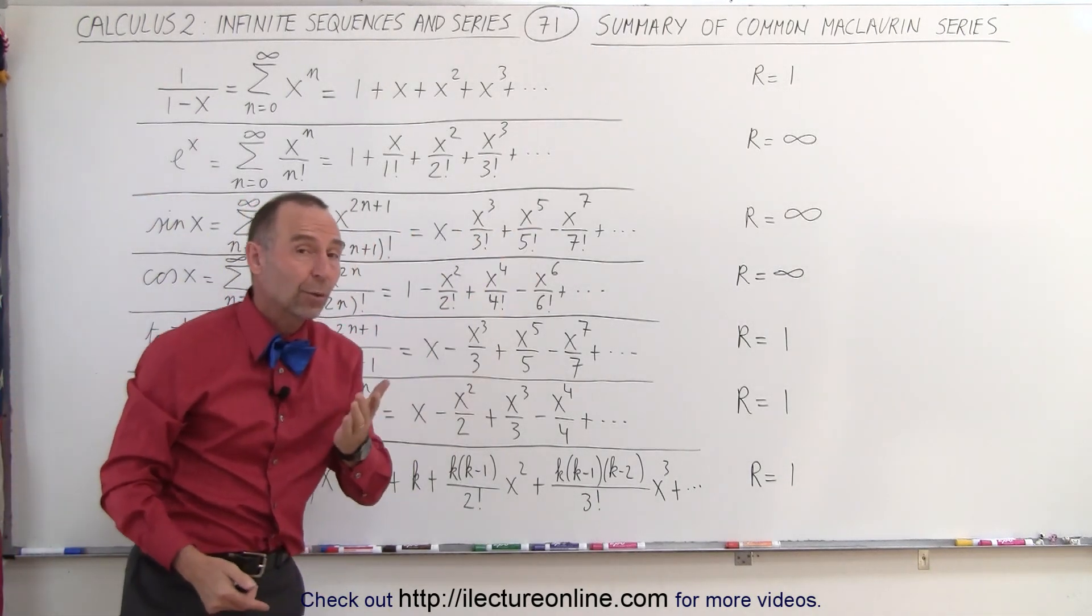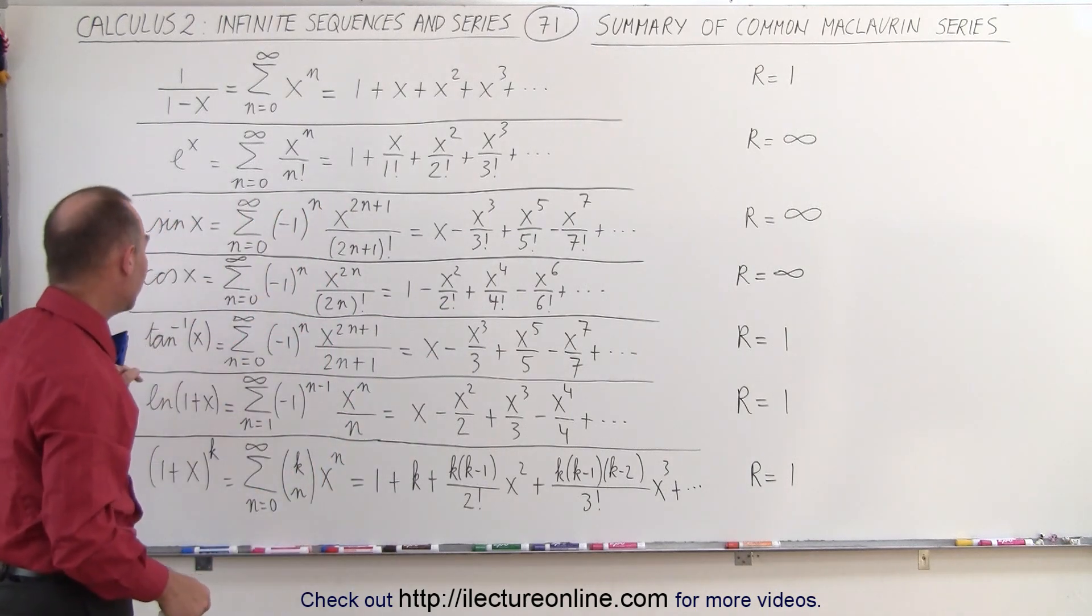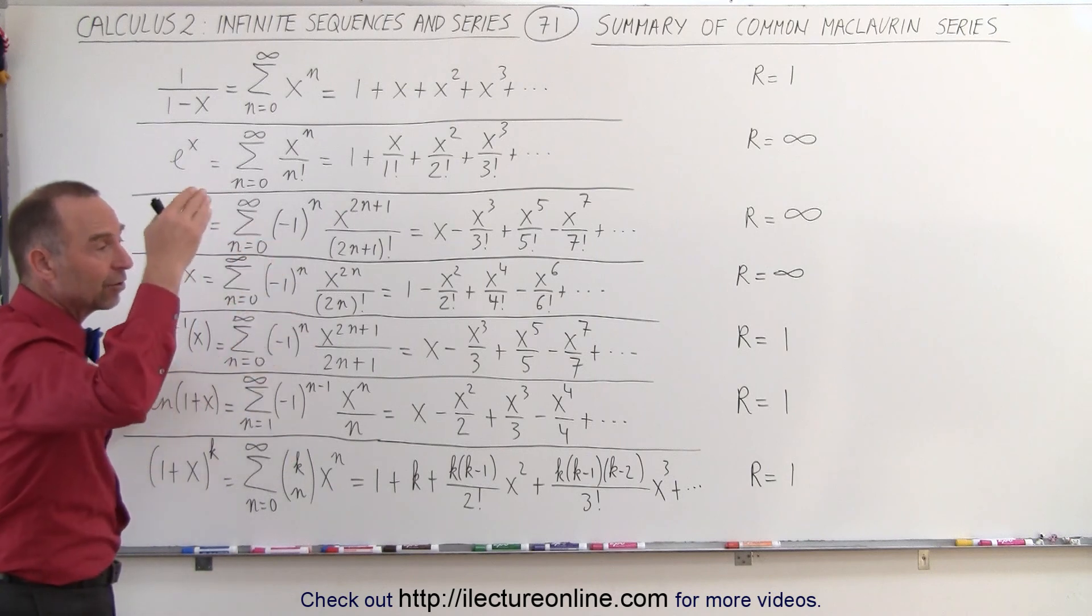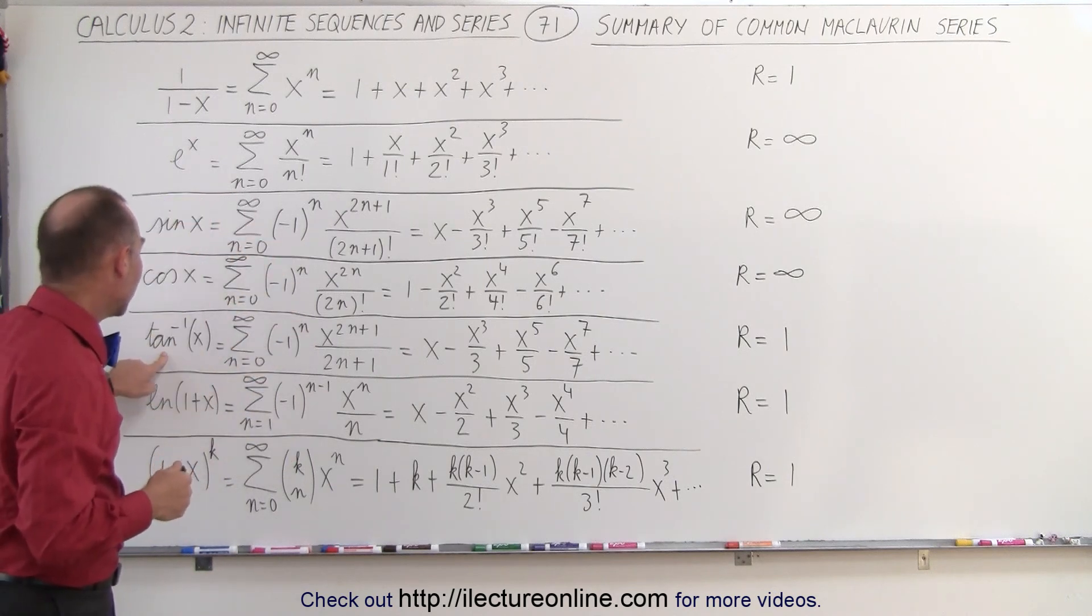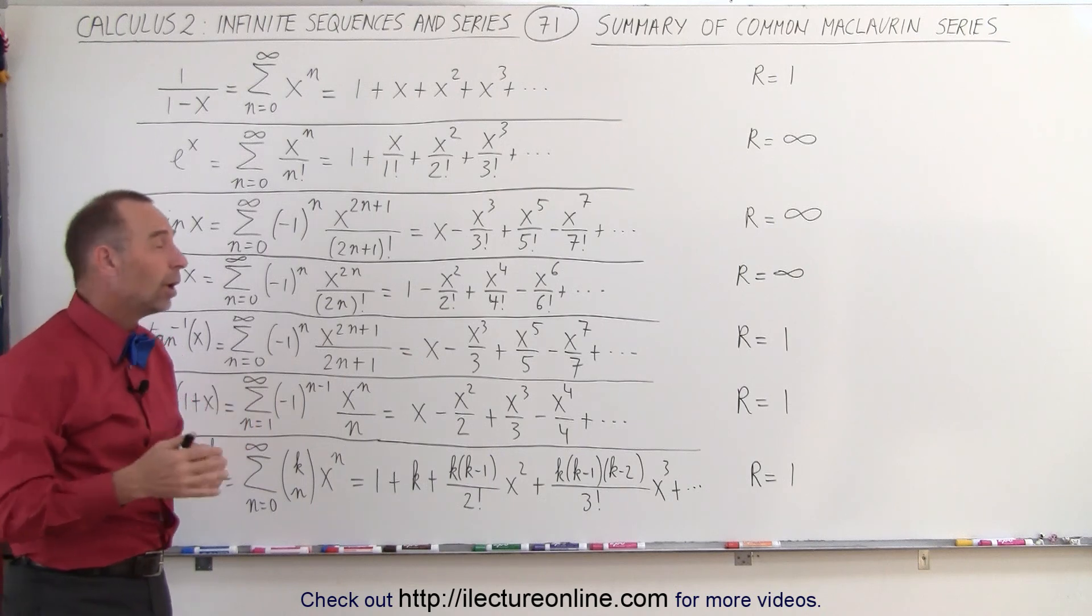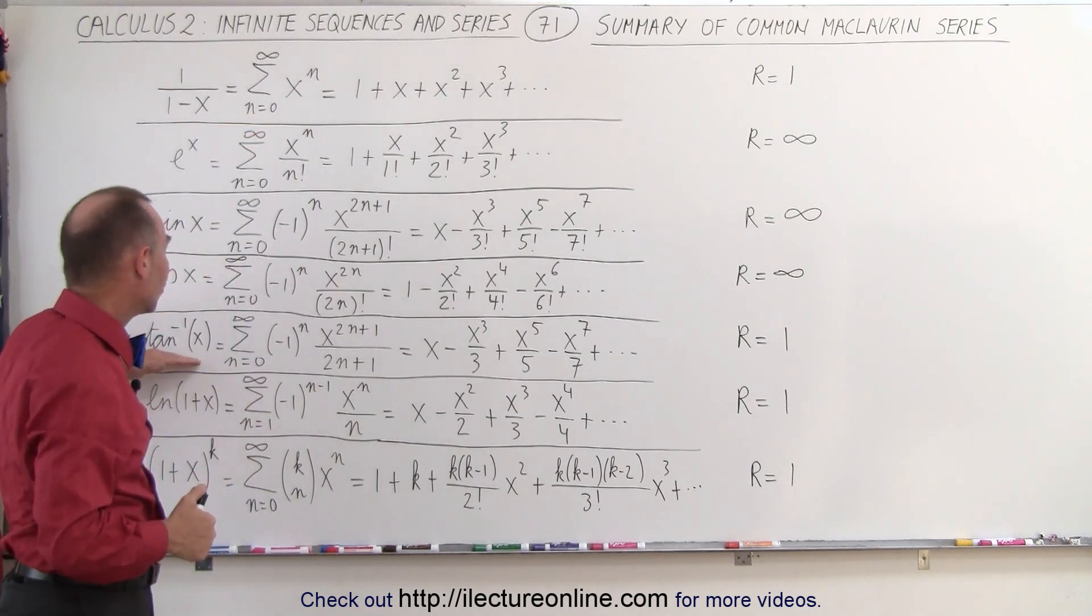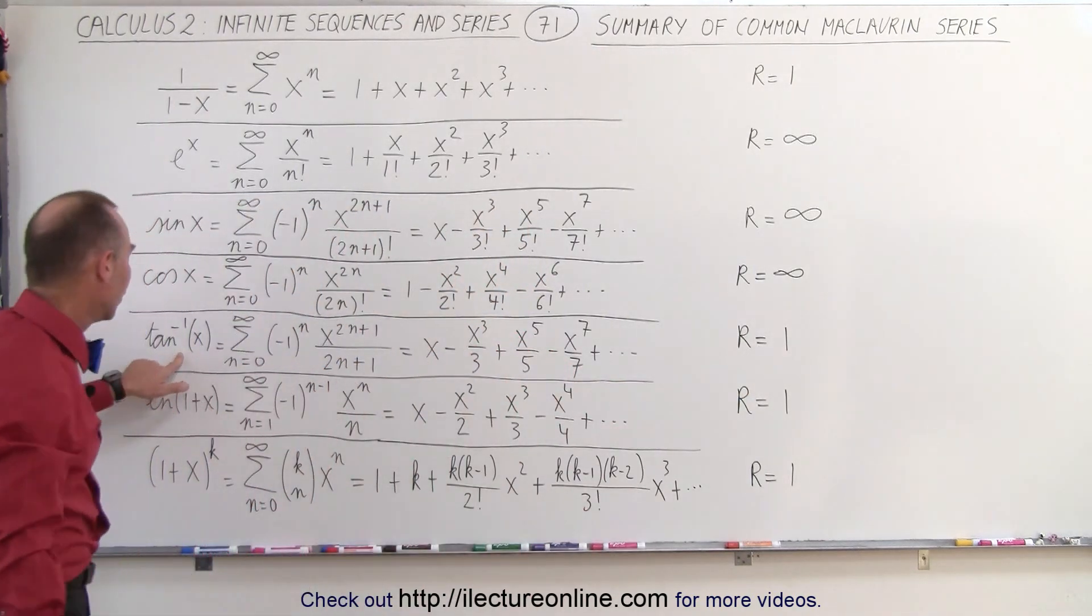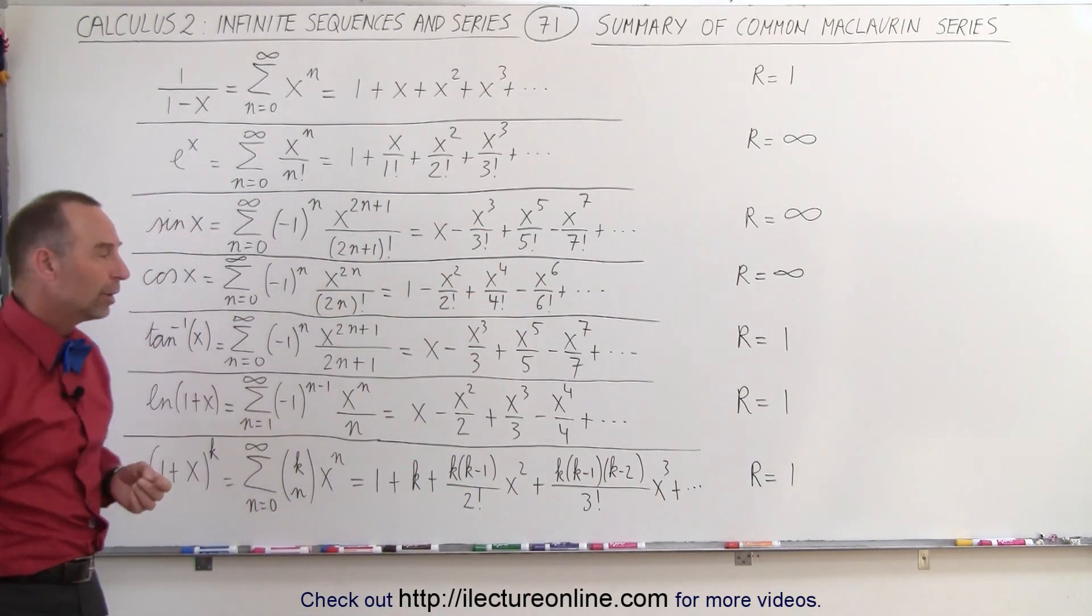And the infinite series will give you the right value for the sine or the cosine. But for the arctangent, we can't do that, because we realize that for angles greater than 45 degrees, the arctangent becomes greater than 1, and then there is no convergence at that point. So you want to make sure that the values you use for x are between negative 1 and 1.